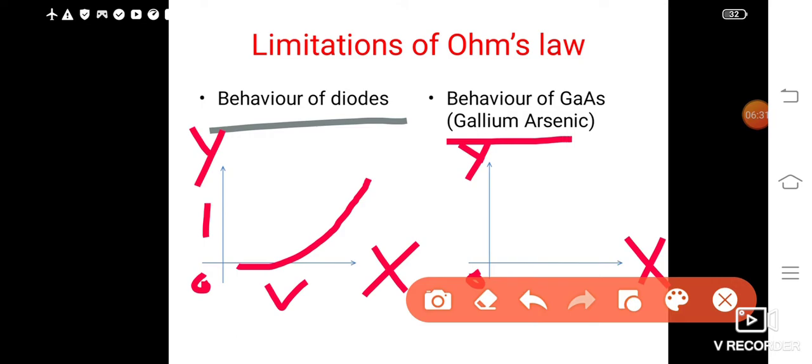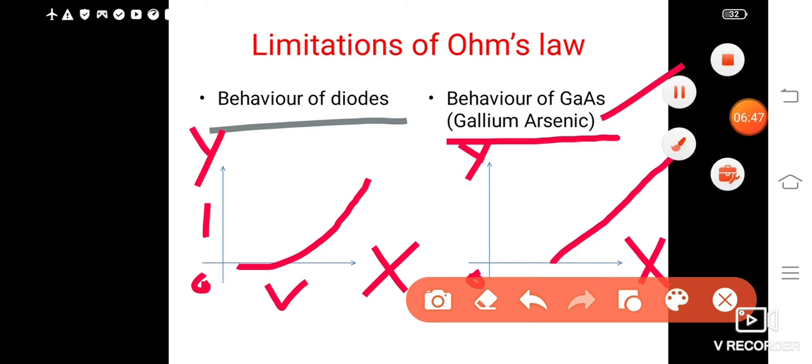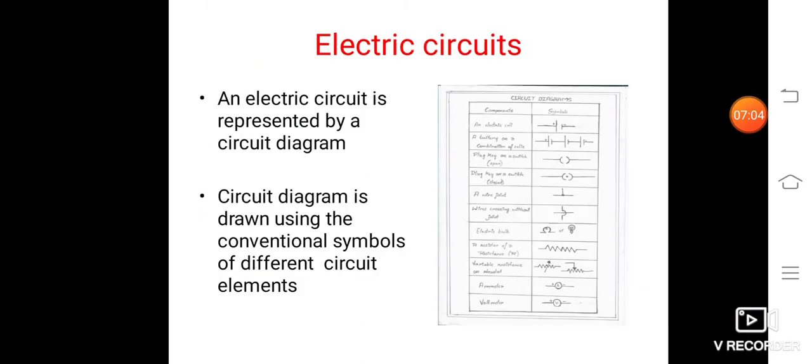Similarly, in case of behavior of GaAs, means gallium arsenic also. Even in this graph, instead of getting a straight line here, you will get a line like this. So the Ohm's law is not true in this case also. So that these are some of the limitations of Ohm's law that is not true for everything.